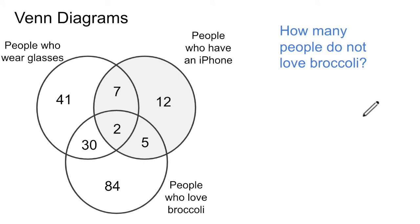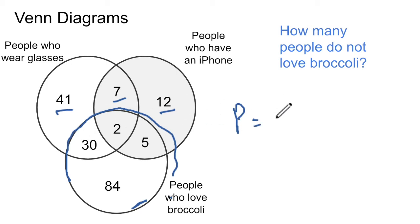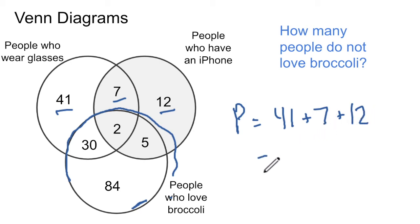Now we have three circles, and our question is: how many people do not love broccoli? People who love broccoli are in this circle here. We're looking for people outside that circle — we don't need a percent, just a count. So we have a 41, a 7, and a 12 — those people are outside of the broccoli lover's circle. Adding those up: 41 plus 7 plus 12 equals 60. So 60 people do not love broccoli.